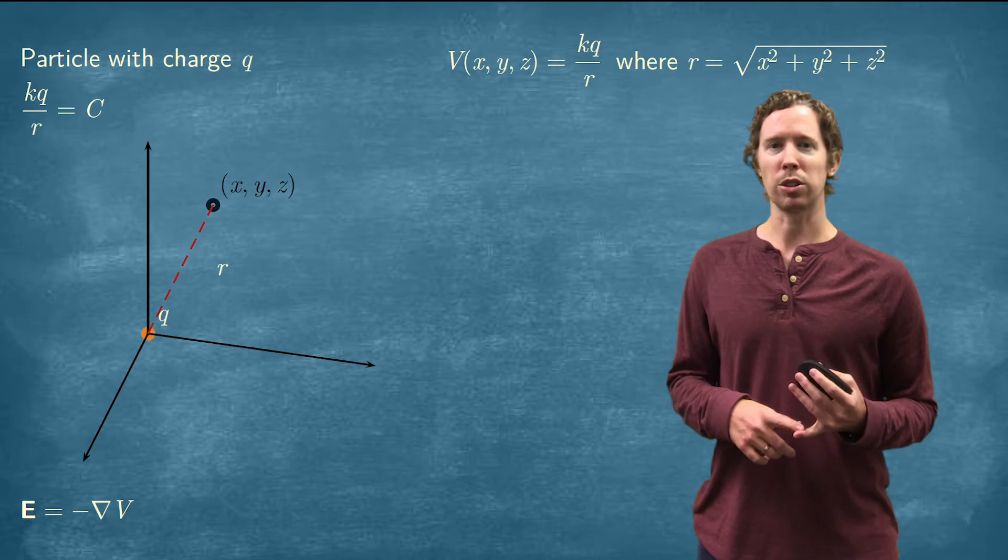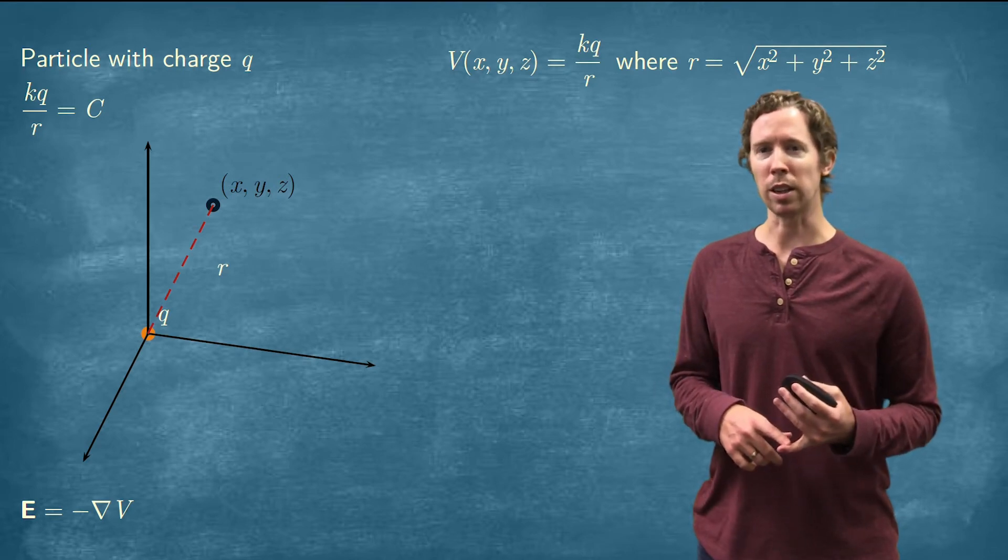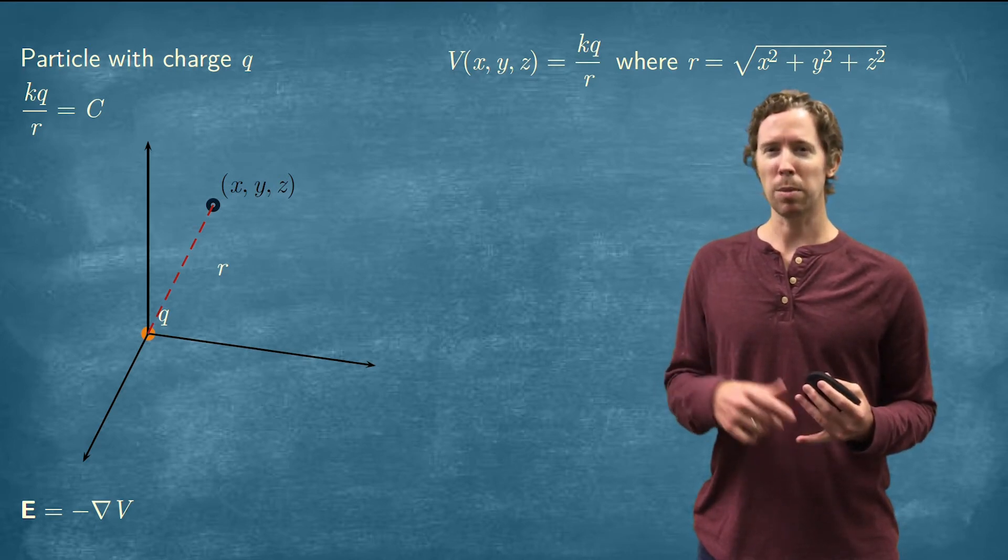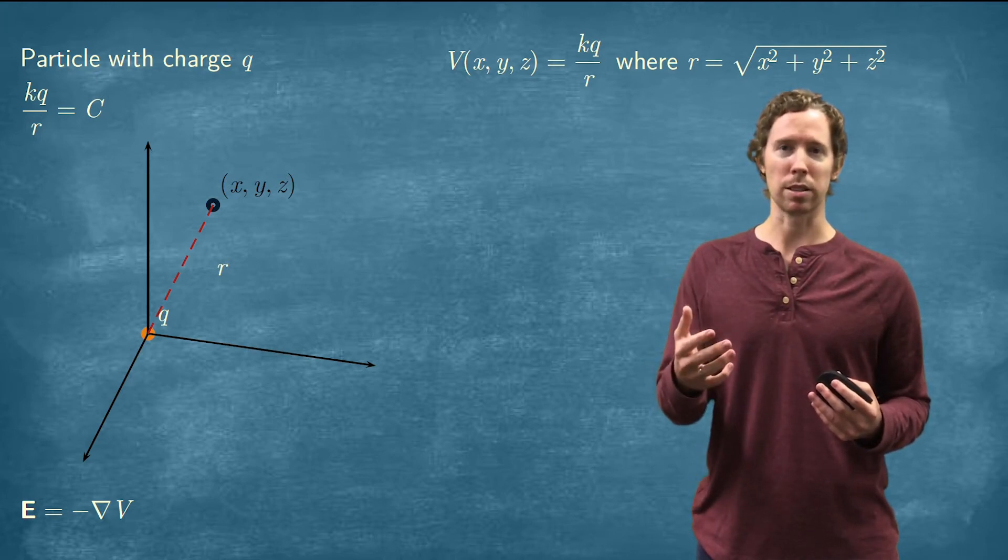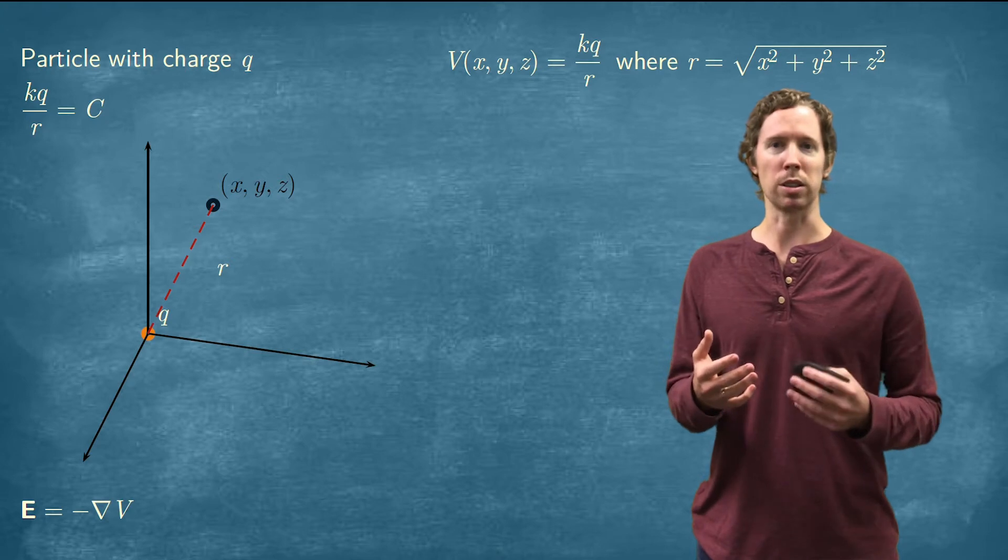The gradient gives us the direction of greatest increase and think about this potential function. You have a constant divided by the distance between the two points or the distance from the origin.